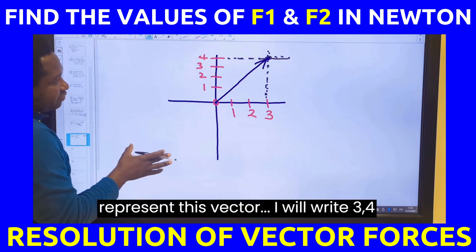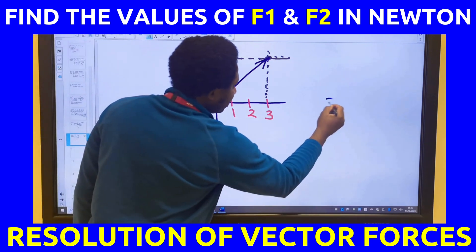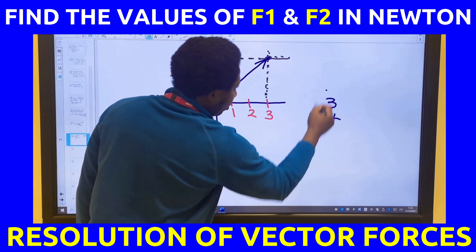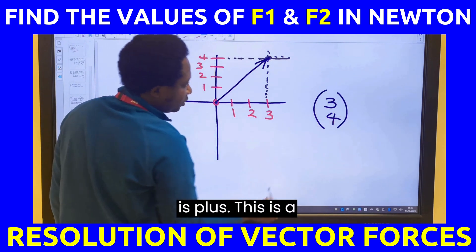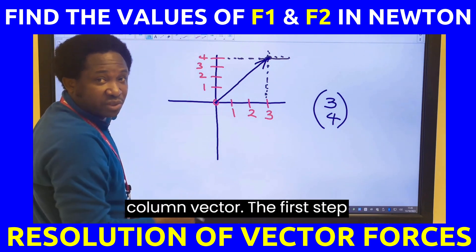To represent this vector, I will write 3, 4 in column. This is plus and this is plus. This is a column vector.